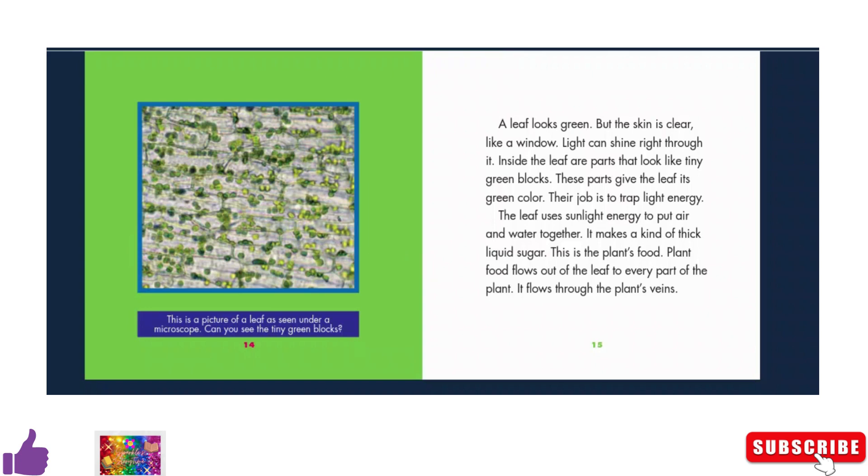The leaf uses sunlight energy to put air and water together. It makes a kind of thick liquid sugar. This is the plant's food. Plant food flows out of the leaf to every part of the plant. It flows through the plant's veins.